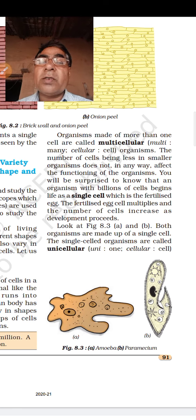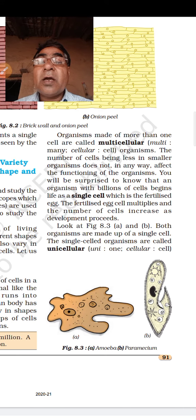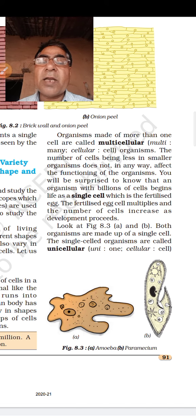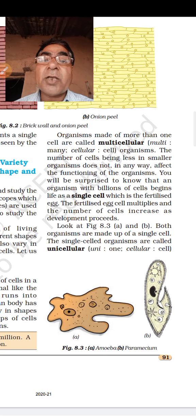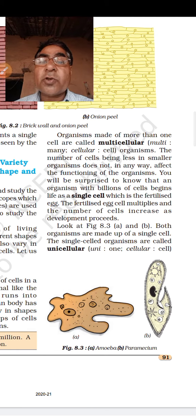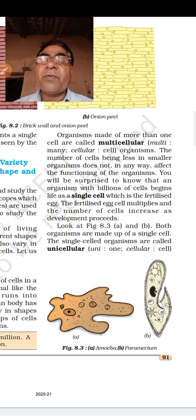Now we consider the size of the cell. When we think about the size of cells, we find that different cells are of different sizes, because some cells are microscopic — you can only see them with a microscope. Some cells can be seen with the naked eye, like the egg of an ostrich, which is the biggest egg. The smallest is Mycoplasma, which cannot be seen with the naked eye.